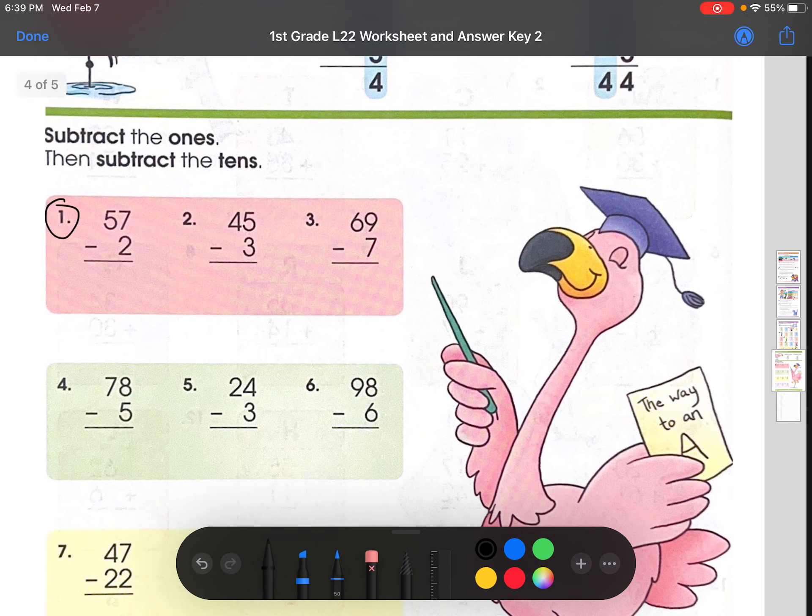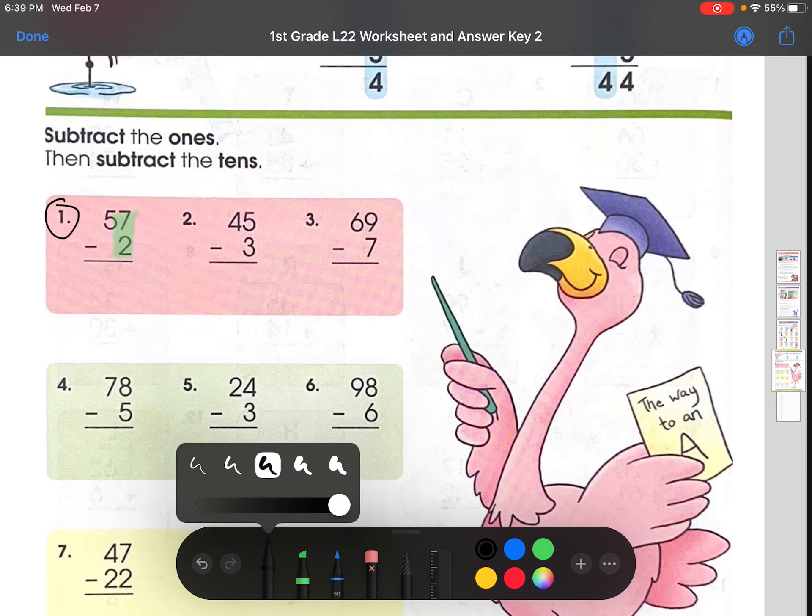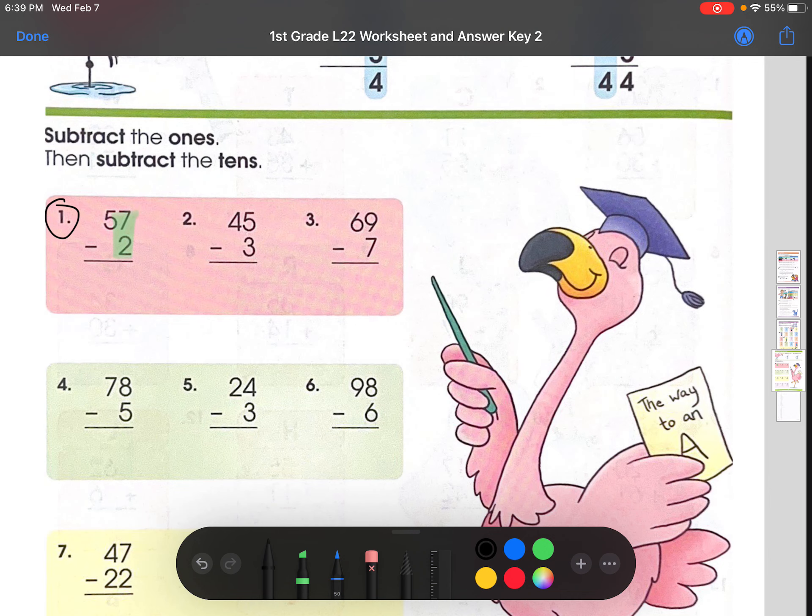Let's do number 1. 57 minus 2. Again, start off with the 1s place. 7 minus 2. Pretty sure you guys can all do this. If you can't, you can use the number line method and go backwards. 1, 2. And count backwards. 6, 5. And bam. That's your 1s place answer. And then you would do the 10s place. Obviously, there's only one number here, which is 5. So it would just be brought straight down. The answer would be 55.